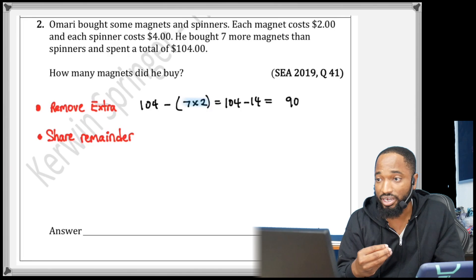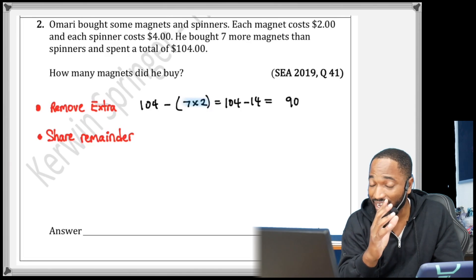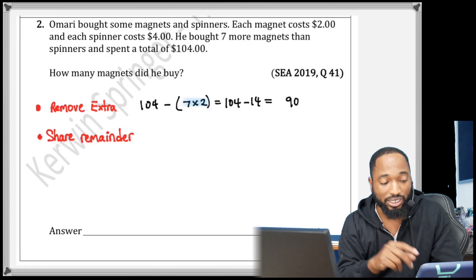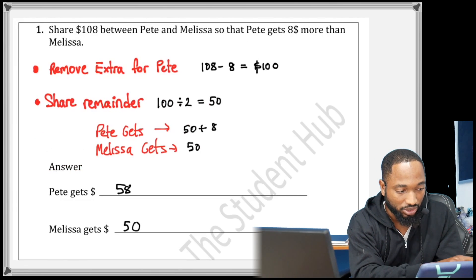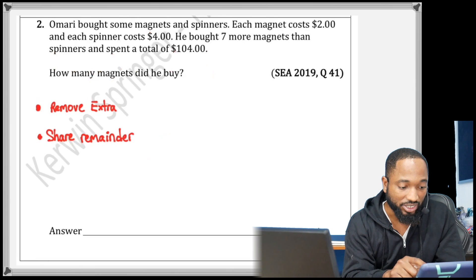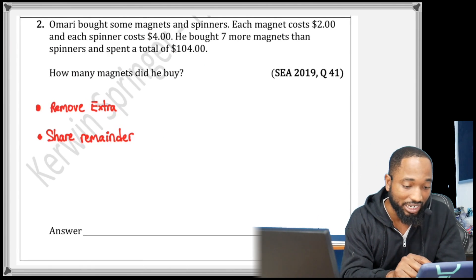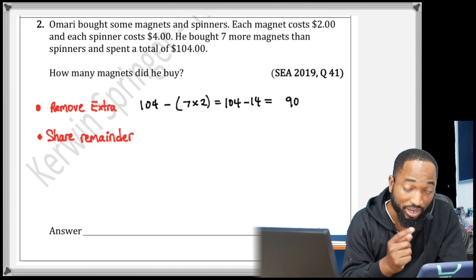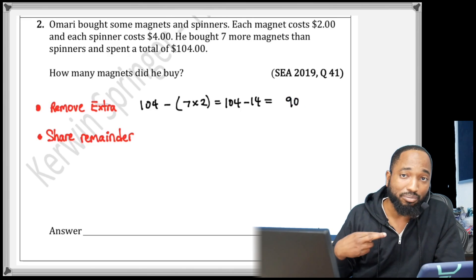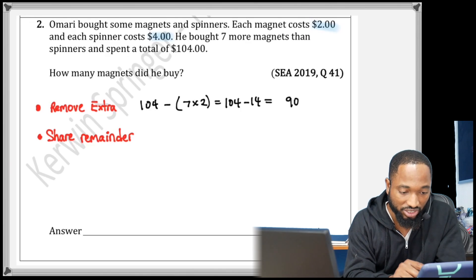Or shared up among the remaining magnets and spinners. But there's still a catch. You're not going to divide by 2 like last time. Here we are going to divide by the cost of each item because remember we're dealing with dollars. After reaching $90, the remaining sum of money, you're not dividing by 2—you'll want to divide by 4 plus 2.